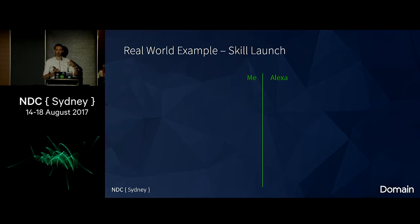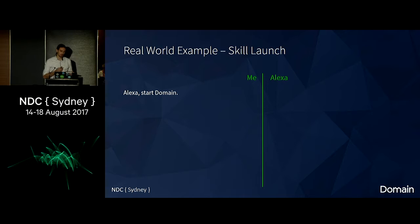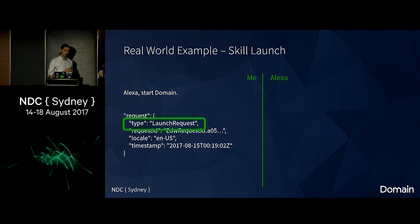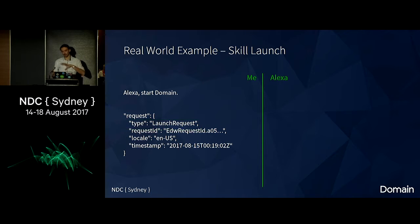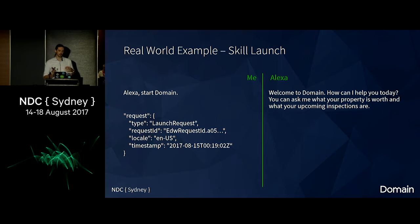Now let's assume we just installed the app and don't know what the skill does. You'd say 'Alexa, start Domain.' The request type is different this time — it's not an intent request, it's a launch request, meaning in your API you can do things a little bit differently. 'Welcome to Domain. How can I help you today? You can ask me what your property is worth and what your upcoming inspections are.' That makes it very clear for users that there are only two things they can ask.